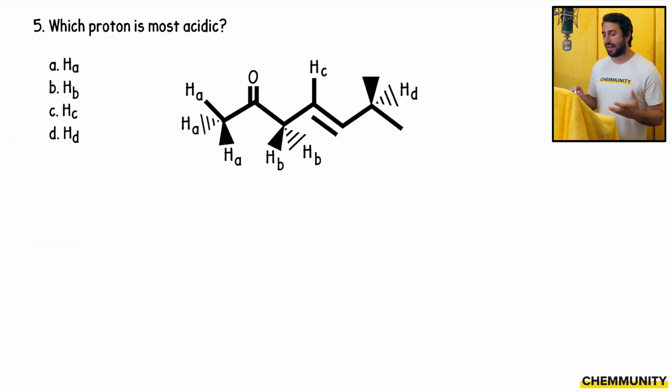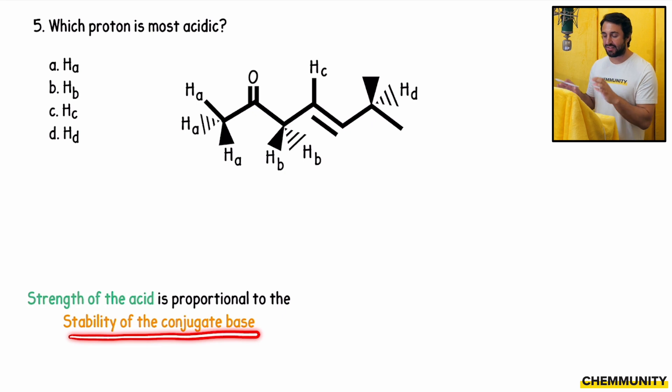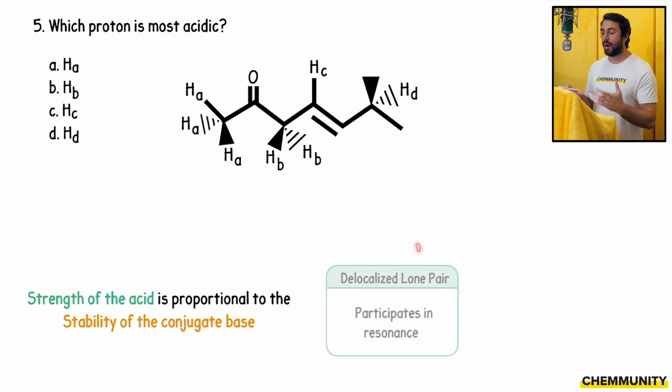Number five asks, which proton is most acidic? With this concept of strength of acidity, more acidic, less acidic, we're always looking at the stability of the conjugate base that is produced. So when we lose a proton, we're going to have a minus charge. What happens to that minus charge? What kind of atom is it sitting on? Is it delocalized? How much is it delocalized? The more delocalized, the more stable that anion is going to be.